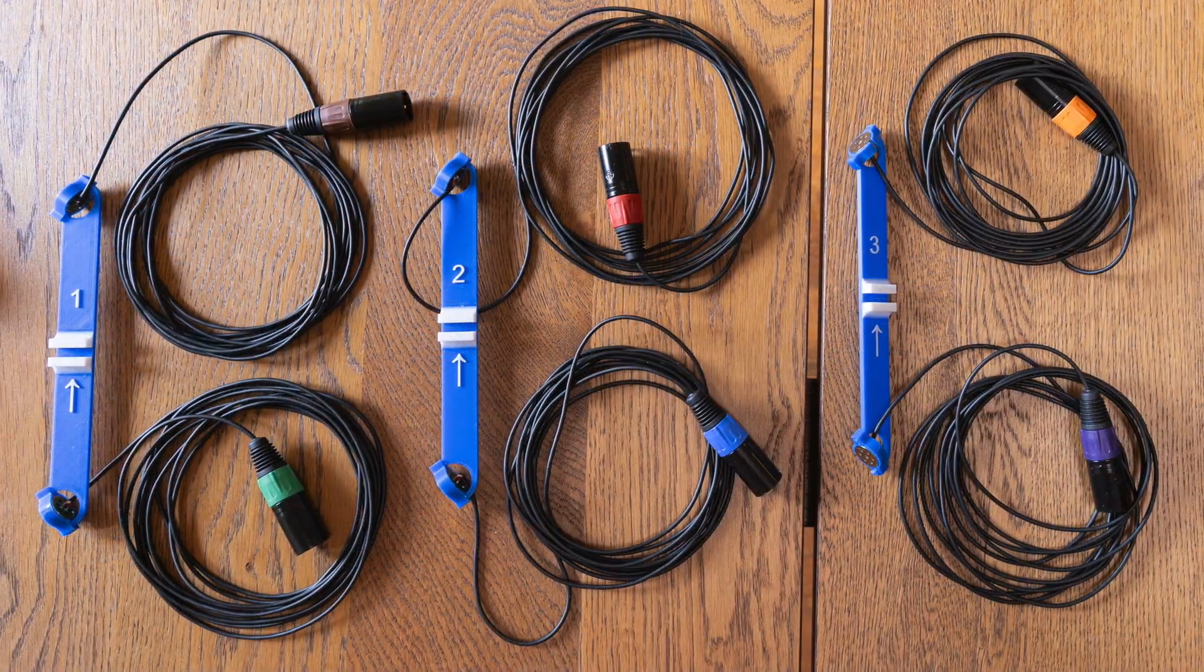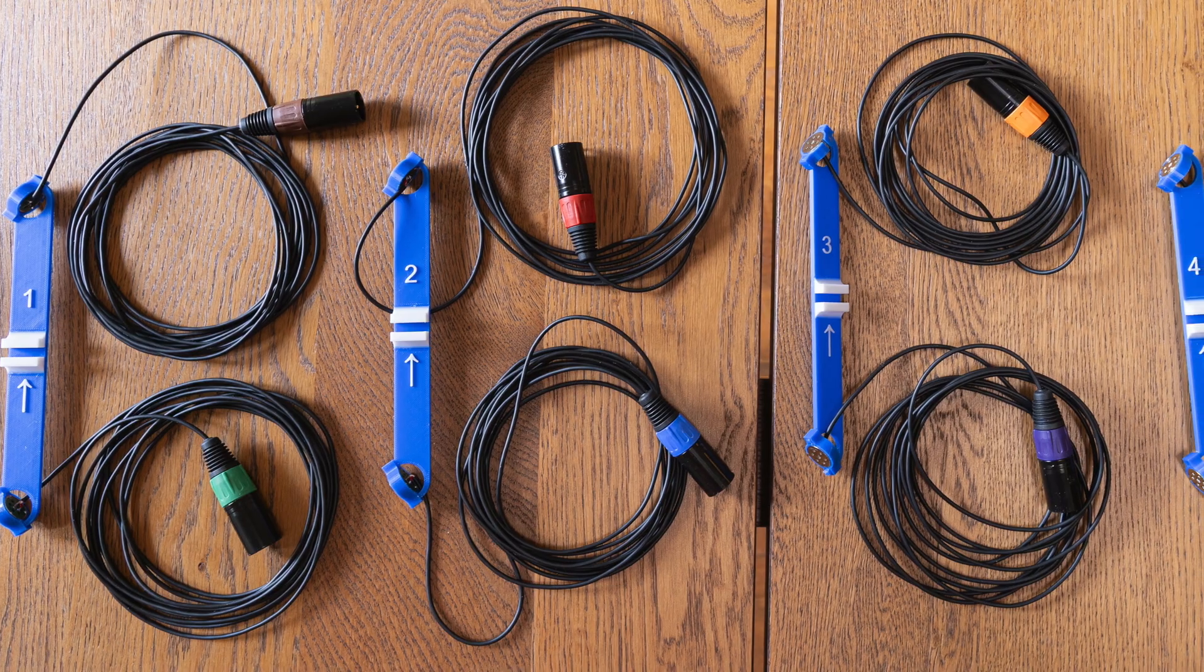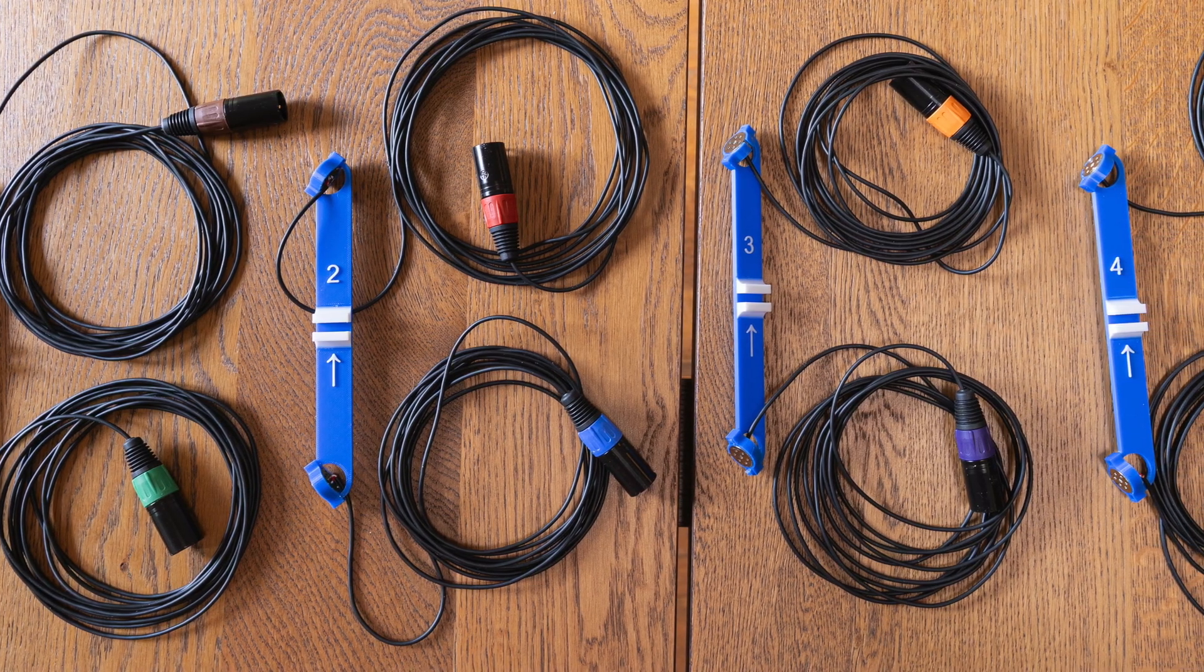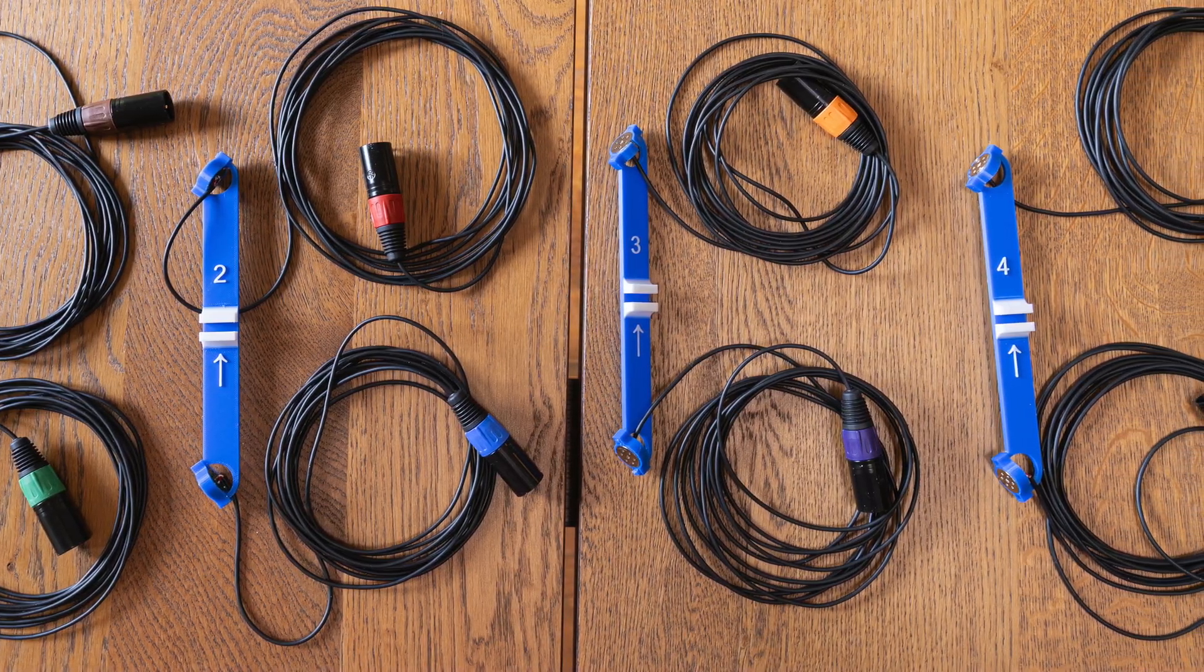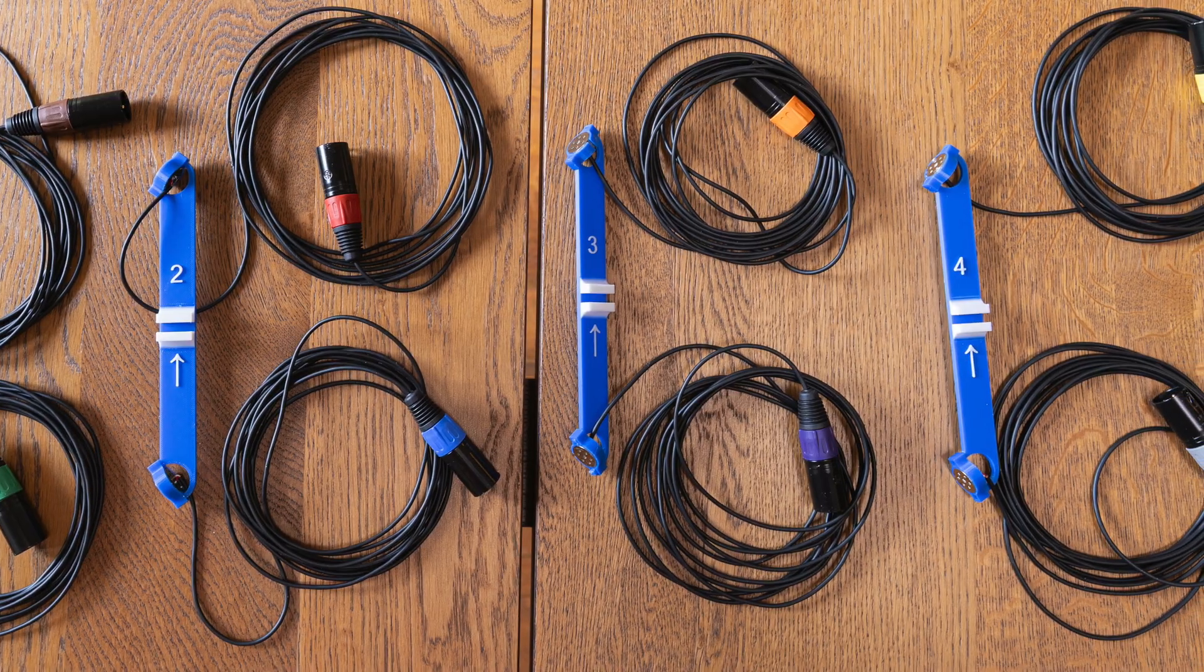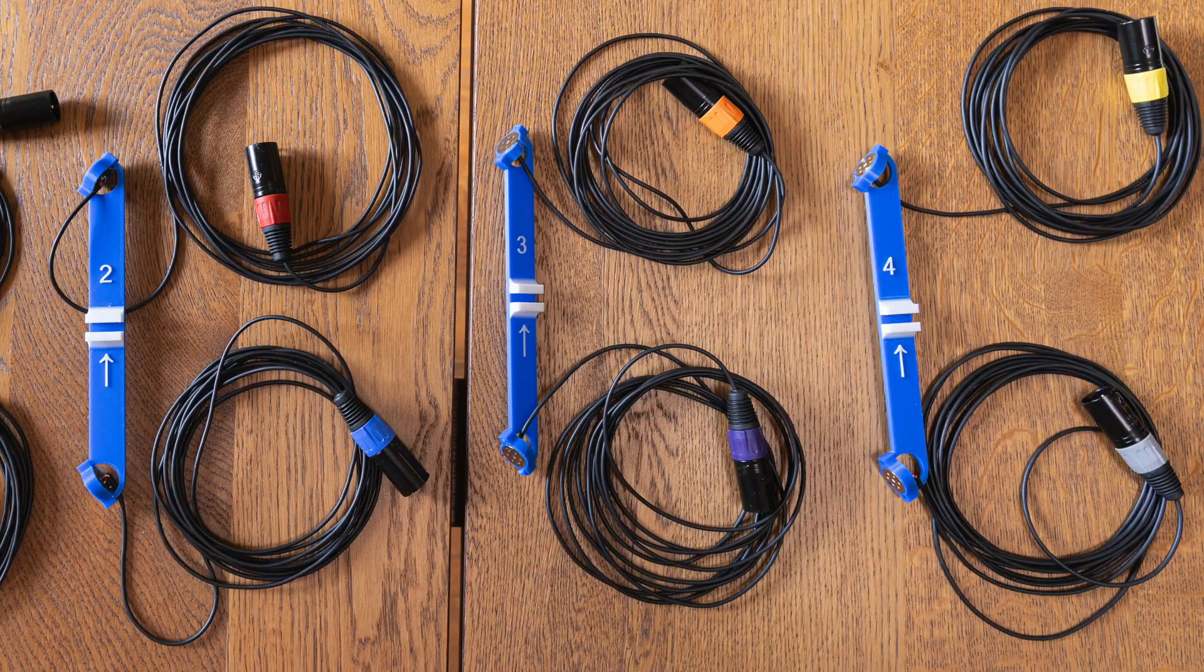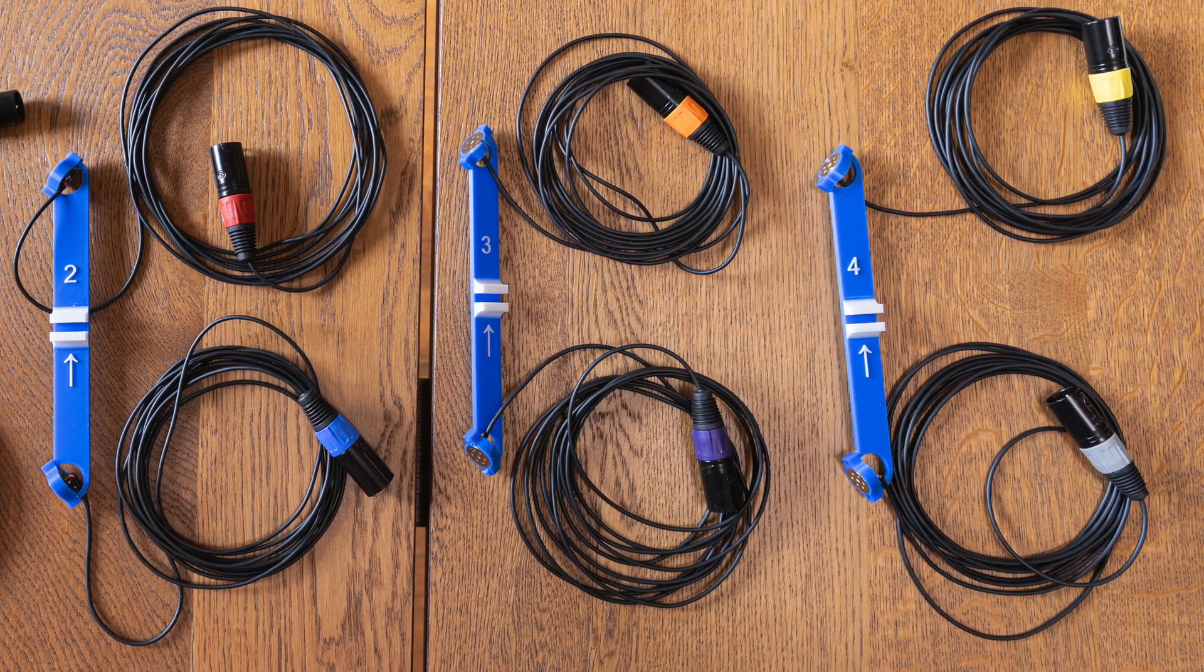Okay, here we go. Arm number one upper is brown. Arm number one lower is green. Arm number two upper is red. Arm number two lower is blue. Arm number three upper is orange. Arm number three lower is purple. Arm number four upper is yellow. And arm number four lower is gray.